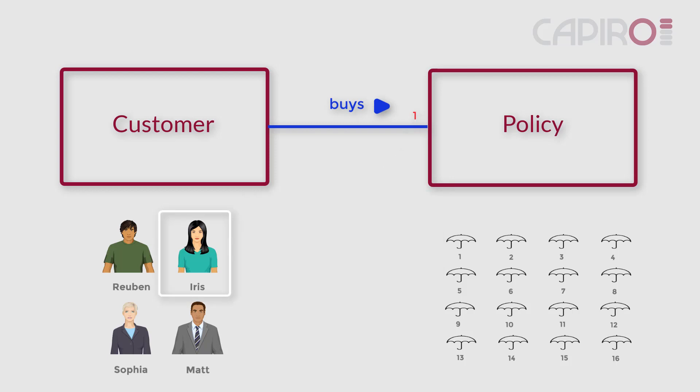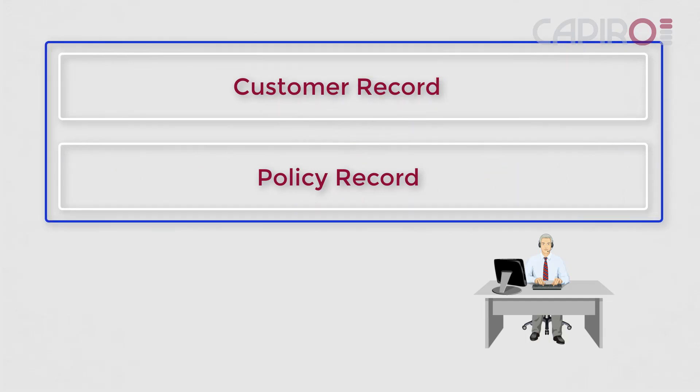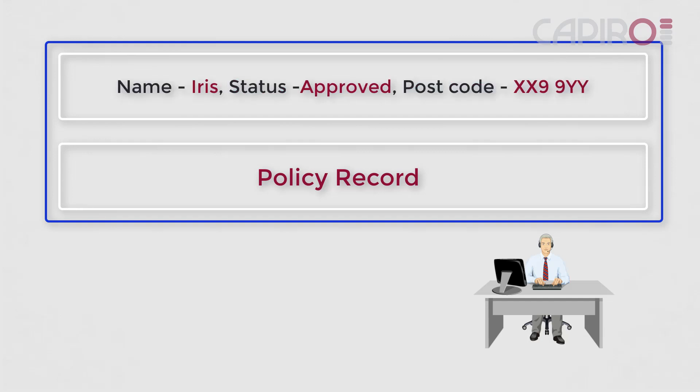Let's look at Iris. When she purchased her first policy, Theo used the computer system to create two records: one to contain the attributes describing her, and one to contain the attributes describing her policy. Because of the business rule stating that customers must have bought a policy, the record for Iris' first policy must be created at the same time as the record for herself. Iris' customer record looks like this, and her policy record looks like this.